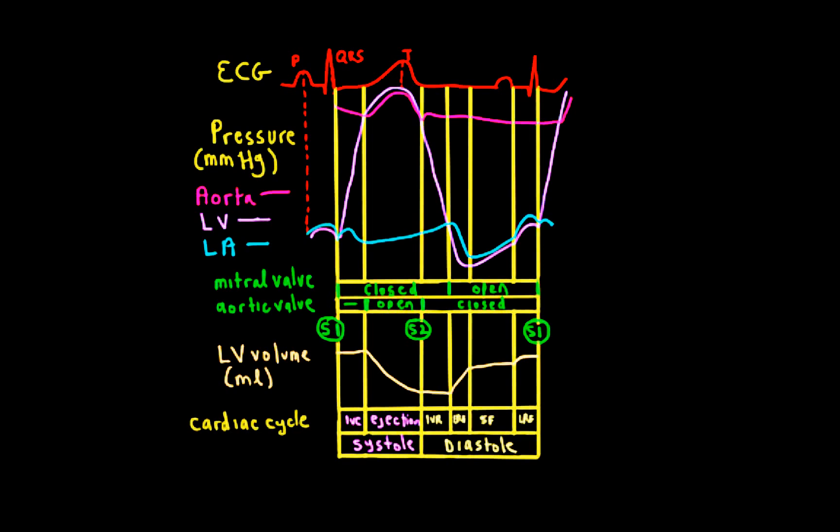That then summarizes the key components of the Wiggers diagram: starting with the changes in pressure of the left ventricle, aorta, and left atrium; the opening and closure of the mitral and aortic valves; how that closure of those valves results in the heart sounds S1 (the lub) and S2 (the dub); the changes in volume that you can infer from what the valves are doing as well as the pressure; and putting that all together with the cardiac cycle and electrocardiogram. That concludes this video on the Wiggers diagram.